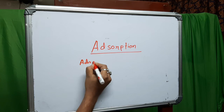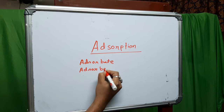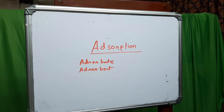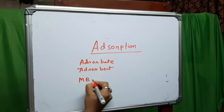One of them is adsorbate and the other one is adsorbent. Adsorbate is the component which you want to remove. An adsorbent is the component by which you want to remove the adsorbate.